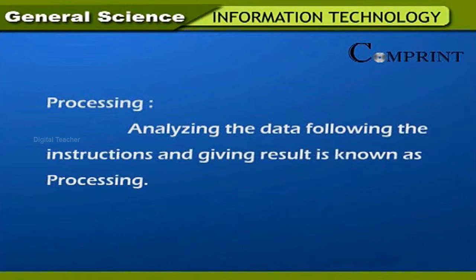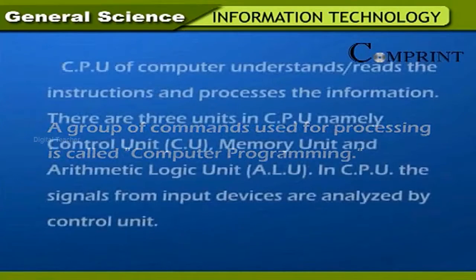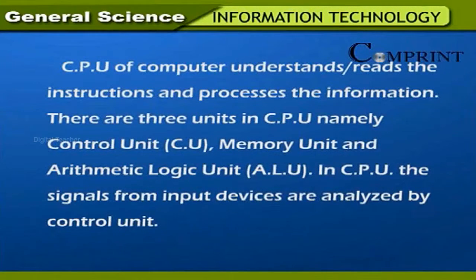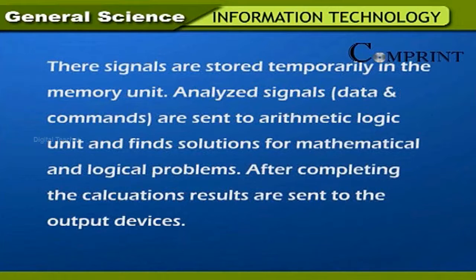Processing. Analyzing the data following the instructions and giving a result is known as processing. A group of commands used for processing is called computer programming. The CPU understands and reads the instructions and processes the information. There are three units in CPU: the control unit, memory unit, and arithmetic logic unit. The signals from input devices are analyzed by the control unit, then stored temporarily in the memory unit.